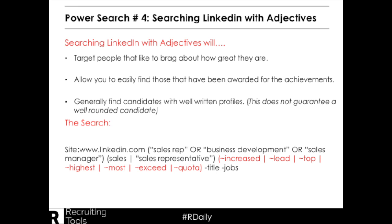Another thing you'll notice is at the beginning of the search, you'll see site colon www.linkedin.com. What this means in Boolean language is that we only want results that are going to come back from the actual LinkedIn site. Note that there are a couple of words we don't want it to search for — for this example, title and jobs. By excluding those, we won't be looking at job descriptions or find these words in somebody's job title.